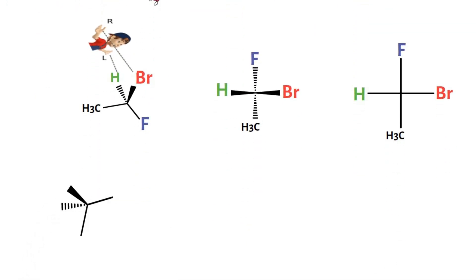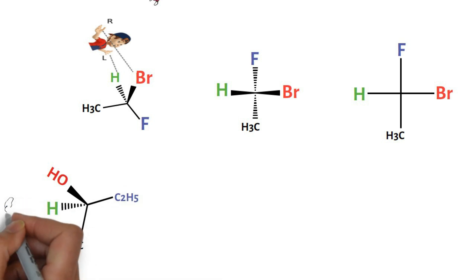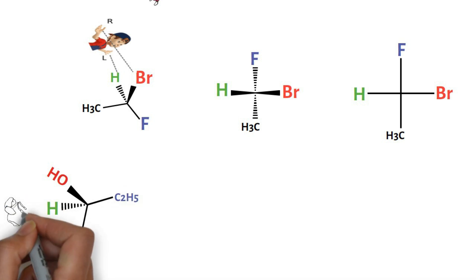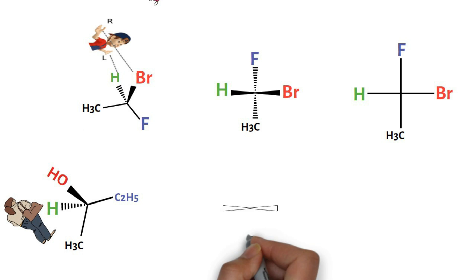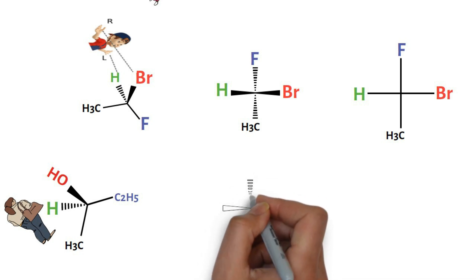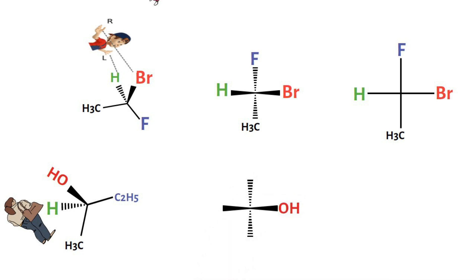Consider another flying wedge projection. To convert this into Fischer projection, stand in between the wedge and dash and look through the chiral carbon. You see OH on the right and H on the left, coming towards you — put them on the right and left wedges of the bowtie. The methyl and ethyl pointing down and up, away from you, are put on the vertical bottom and top dashes of the bowtie. The same is reproduced on a cross to give the Fischer projection.